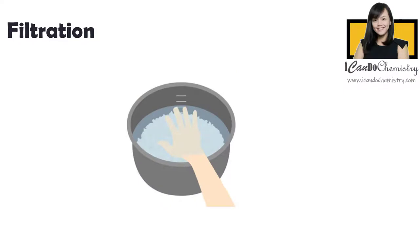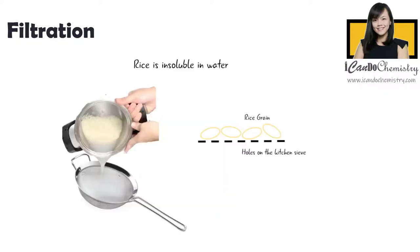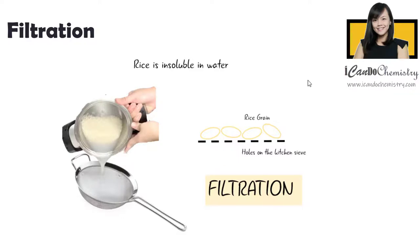Now you do realize when we wash the rice in water, the rice did not dissolve in the water. This is because rice is insoluble in water. We can simply use a kitchen sieve to separate rice and water because the size of a rice grain is bigger than the hole of the kitchen sieve. Now the act of separating insoluble solid from a liquid is called filtration in chemistry terms.